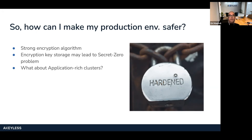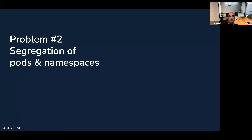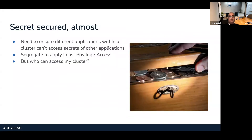A cluster can contain multiple applications or application stacks, meaning there are multiple pods running in the same or different namespaces with different purposes. There is no reason why one application should be able to see the secrets of another. This brings us to the next problem: how do you segregate access to secrets between different namespaces and pods? In the regular mechanism, this is not super simple to do, but any modern secret management platform provides the ability to distinguish different applications while preserving the least-privileged access approach. This can be done by a specific namespace or by a specific pod, and this minimizes the blast radius in case one of the applications has been breached.